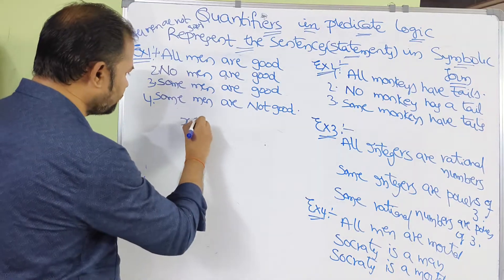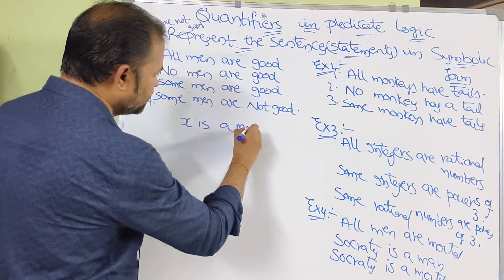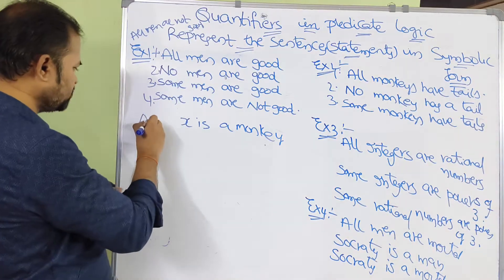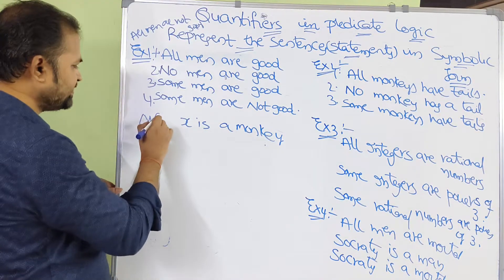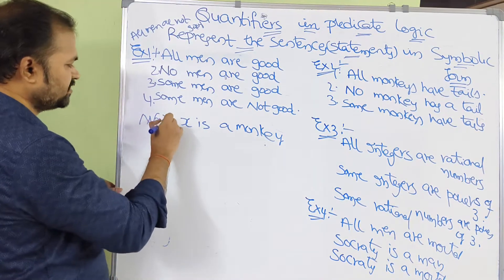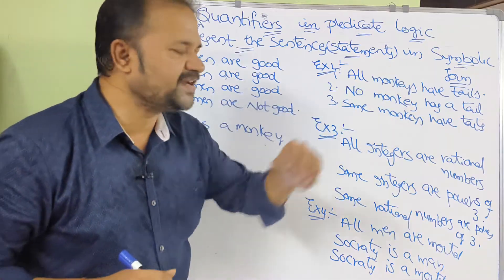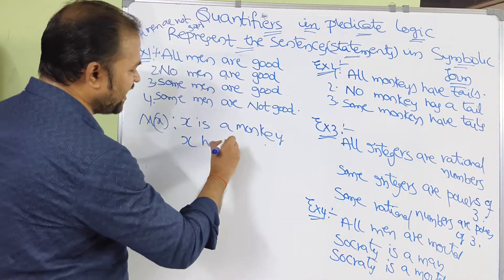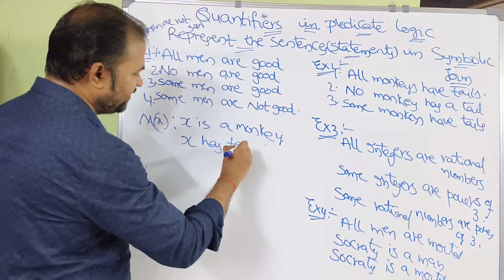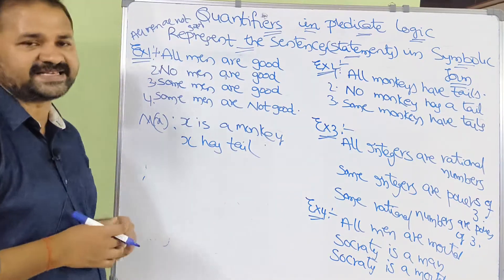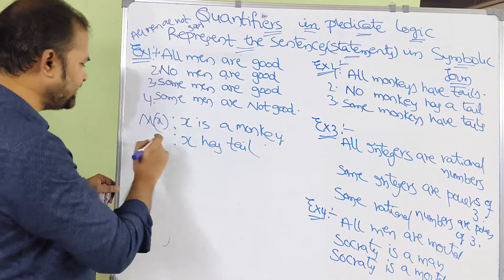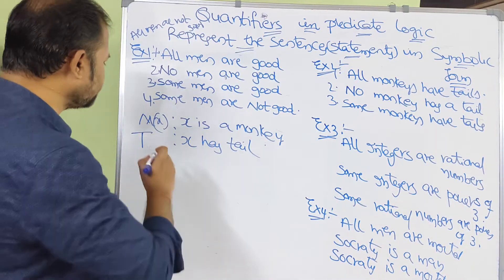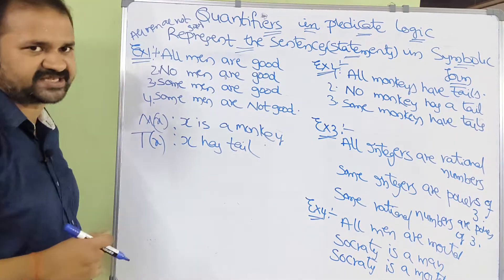For 'X is a monkey', since monkey starts with M, the proposition function is M(x), where x is the subject. For 'X has a tail', since tail starts with T, the proposition function is T(x), where x is the subject.